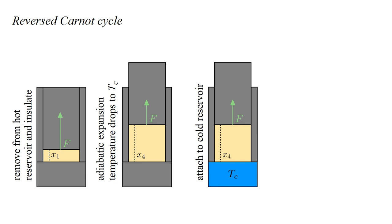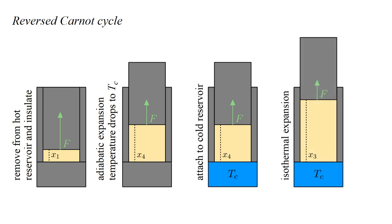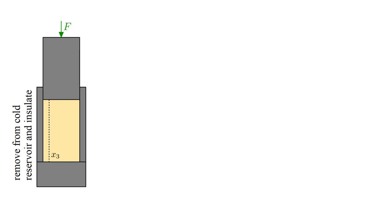The cold reservoir is attached, and the gas expands isothermally, doing work on the environment and extracting heat from the cold reservoir. The cold reservoir is removed, and the system is insulated.